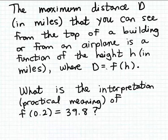The question in this example is, what is the interpretation or the practical meaning of this equation, which is also using function notation: f of 0.2 is equal to 39.8? When we're asked for an interpretation, what we're going to do is take this mathematical expression, this equation, and we want to rewrite it as a statement in words.